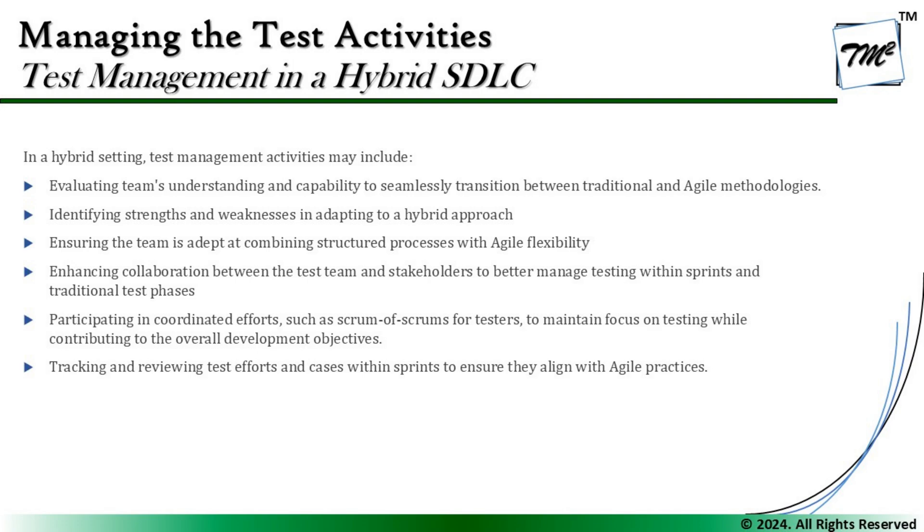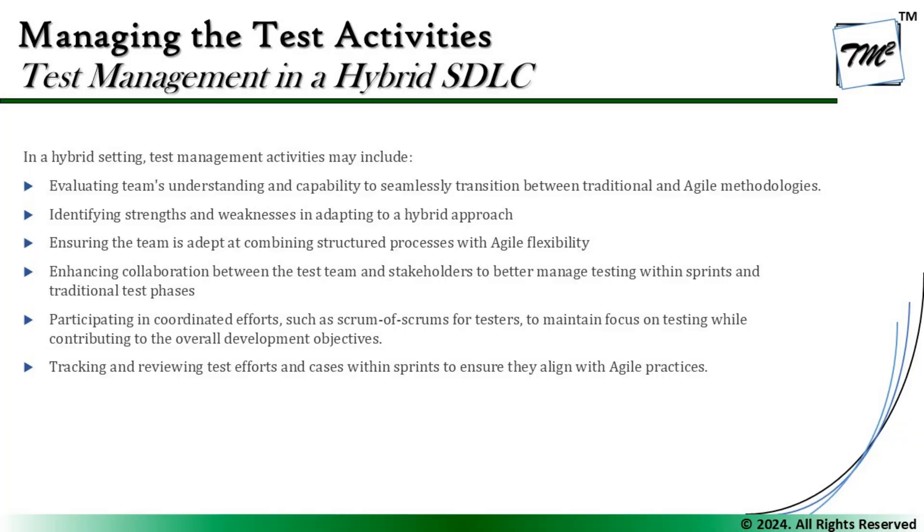The next point is ensuring the team is adept at combining structured processes with agile flexibility. The team should be ready and understand what transformations and activity changes will happen. Further, enhancing collaboration between the test team and stakeholders to better manage testing within sprints and traditional test phases is critical. The team might be used to working independently in traditional models, but blending into hybrid means looking at how to collaborate better, because agile will bring that collaborative flavor into the traditional approach.